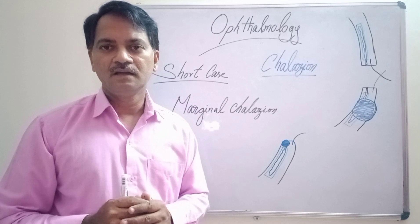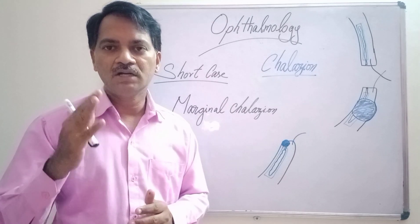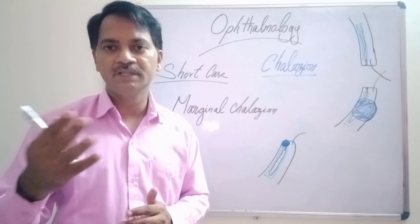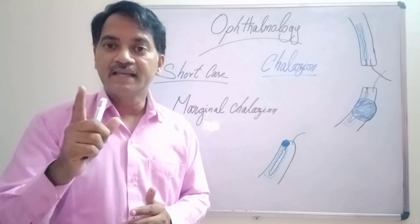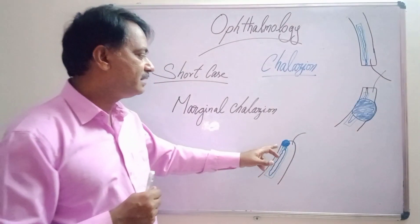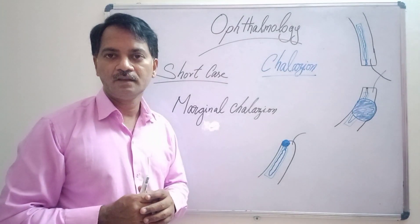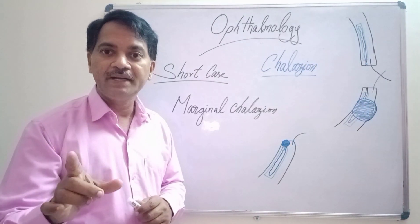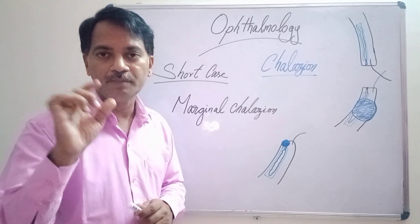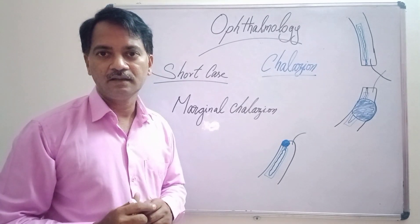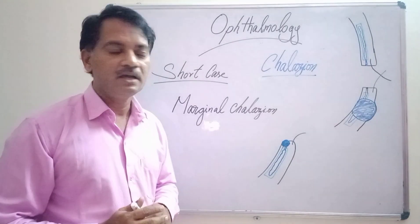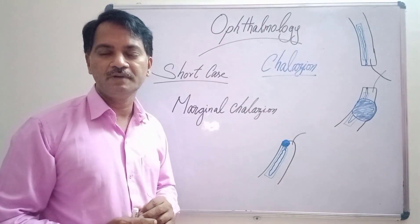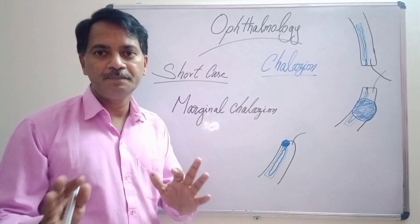Sometimes this chalazion, unlike the case we discussed where it was away from the lid margin, can be close to the lid margin. A chalazion that develops in the duct of the meibomian gland is called a marginal chalazion, and this will also be not painful.